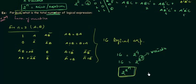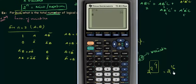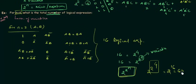For n equals 4: we compute 2 to the power 2 to the power 4 = 2 to the power 16. Using a calculator, 2 to the power 16 equals 65,536. It is nearly impossible to write down 65,536 logical expressions for 4 variables, so remembering this formula allows you to get the answer directly.